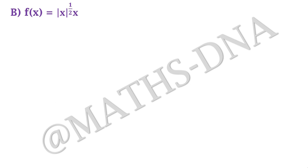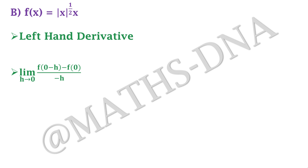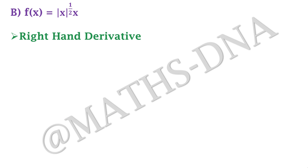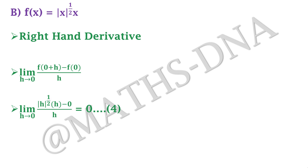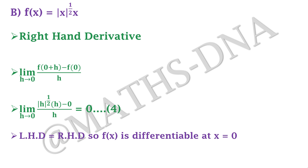Moving on, we check option B. f(x) = |x|^(1/2) · x. We find the left-hand derivative: limit h → 0 of [f(0 − h) − f(0)] / (−h) = limit h → 0 of [|−h|^(1/2) · (−h) − 0] / (−h), which clearly equals 0. Call this equation 3. From here, the left-hand derivative equals the right-hand derivative, so f(x) = |x|^(1/2) · x is differentiable at x = 0.